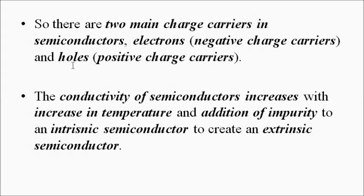In semiconductors we have two main types of charge carriers: electrons as negative charge carriers, and holes as positive charge carriers. A hole is a hypothetical concept — a vacant electronic site. A vacancy for an electron has a strong force of attraction for electrons, so a neighboring electron rushes to occupy that space. There are two ways to increase the conductivity of semiconductors: one is increasing the temperature, and the other is the addition of impurity. Adding impurity to an intrinsic semiconductor creates an extrinsic semiconductor — the p-type and n-type semiconductors.